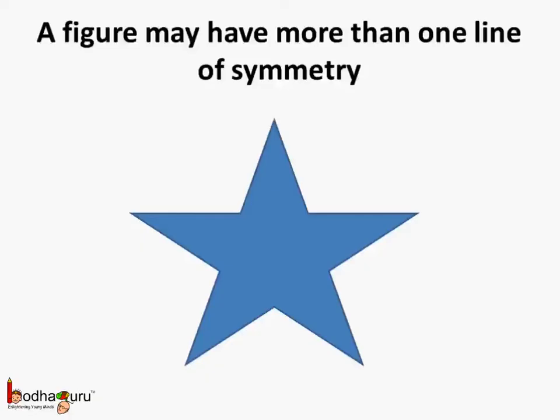As we saw, a figure can have more than one line of symmetry. Like the blue star we saw, it had one, two, and three lines of symmetry.